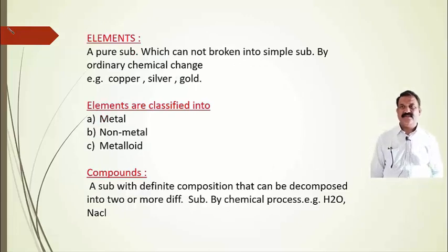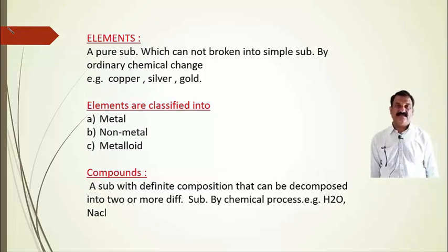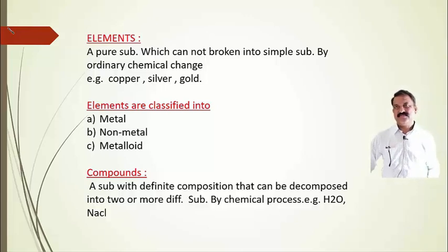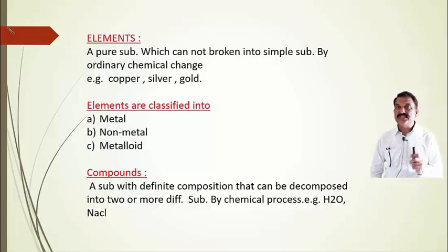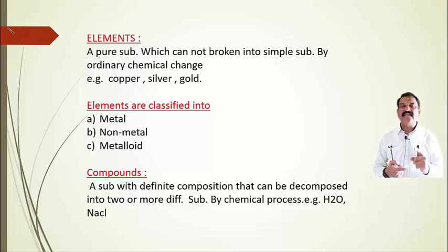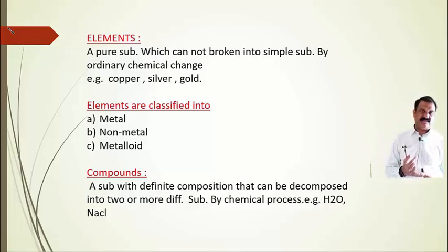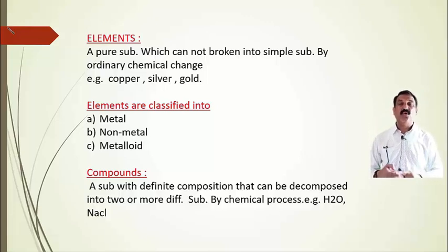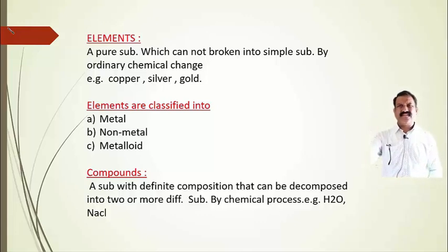A mixture can be subdivided into two classes: homogeneous mixture and heterogeneous mixture. A pure substance is divided into two types: elements and compounds. An element is a pure substance which cannot be broken into a simpler substance by ordinary chemical change — for example, copper, silver, and gold. Elements are further classified into metals, non-metals, and metalloids.